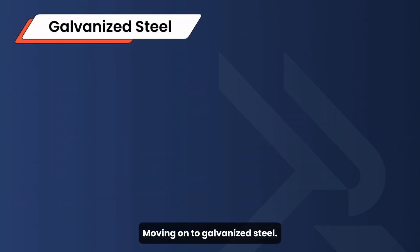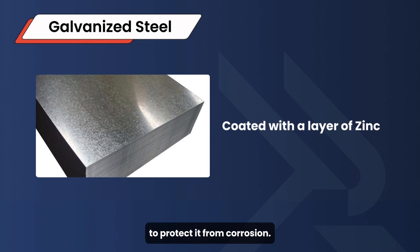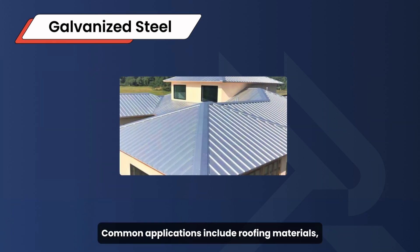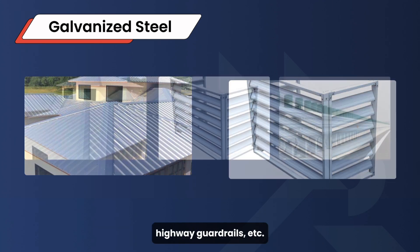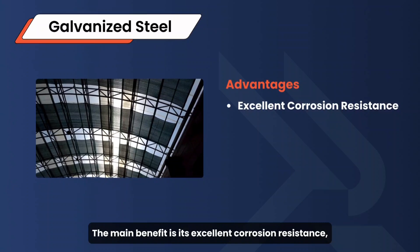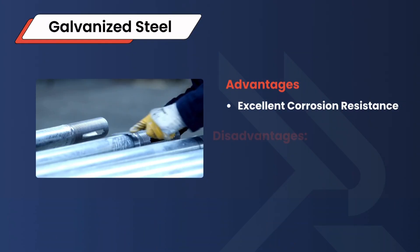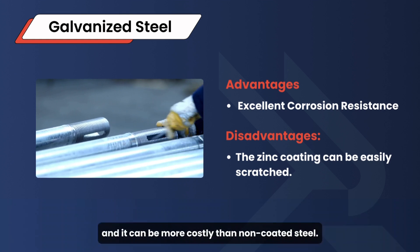Moving on to galvanized steel. This type of steel is coated with a layer of zinc to protect it from corrosion. Galvanized steel is highly resistant to rust and corrosion, making it perfect for outdoor and marine applications. Common applications include roofing materials, outdoor air conditioning units, and highway guardrails. The main benefit is its excellent corrosion resistance, which extends the life of the product in harsh environments. However, the zinc coating can be damaged by scratches, and it can be more costly than non-coated steel.